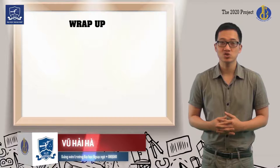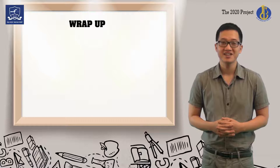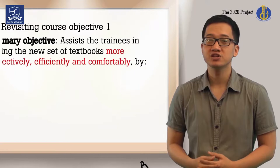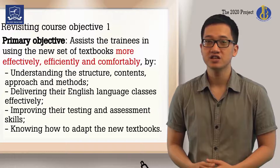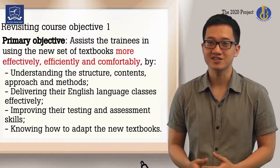We will be revisiting the objectives that the course sets to achieve, to see if we have achieved them or not. Let's continue to revisit course objective number 1 in this video. The first objective of the course is for you to use the new set of textbooks more effectively, efficiently and comfortably. Have we achieved it? Let's take a closer look.